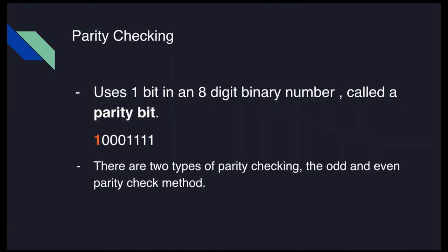Parity checking is probably the most mathematical method. It usually involves sending data in the form of eight-bit values, but only seven bits are the actual data we're sending. As part of parity checking, we add one extra bit just for error checking — called a parity bit. So while we're sending eight-bit numbers, only seven bits are actual data and one bit is purely for error checking.